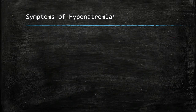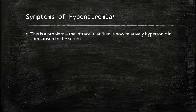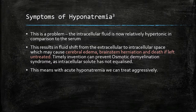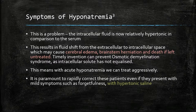Acute hyponatremia is an issue. The intracellular fluid is now relatively hypertonic in comparison to the serum, causing fluid to shift from the extracellular to intracellular space, which may result in cerebral edema, brainstem herniation, and death if left untreated. Timely intervention can prevent this as intracellular solute has not yet equalized, meaning with acute hyponatremia we can tackle it aggressively. It is important to rapidly correct these patients even if they present with mild symptoms such as forgetfulness — we use hypertonic saline.